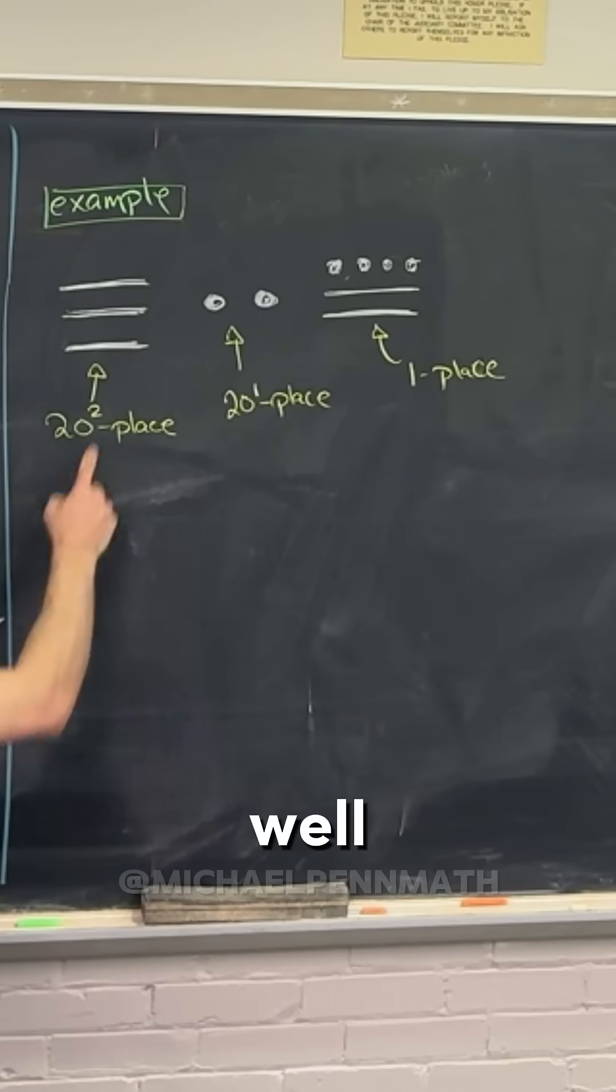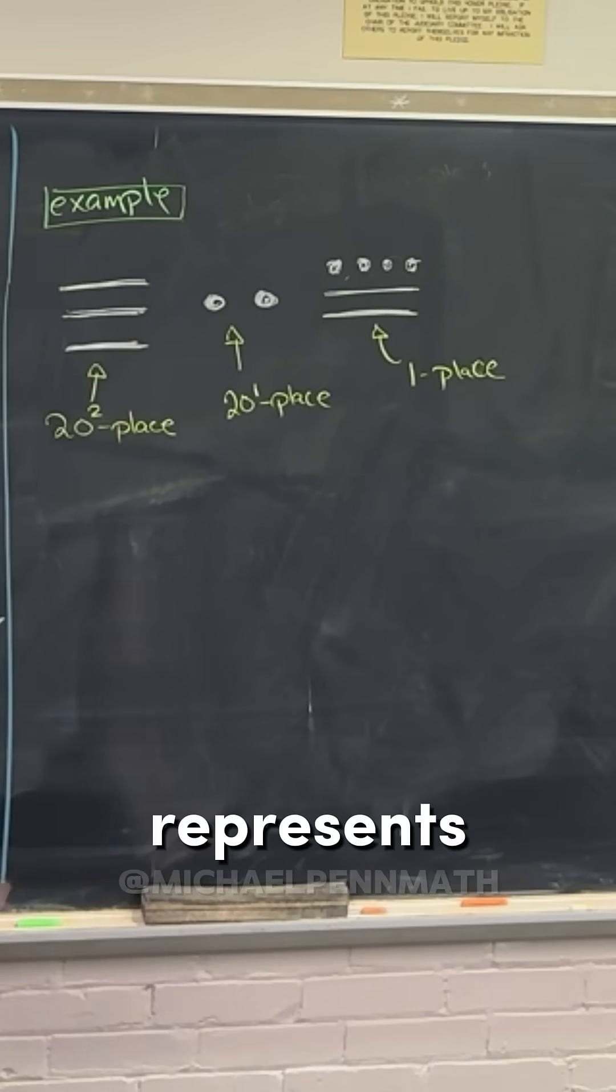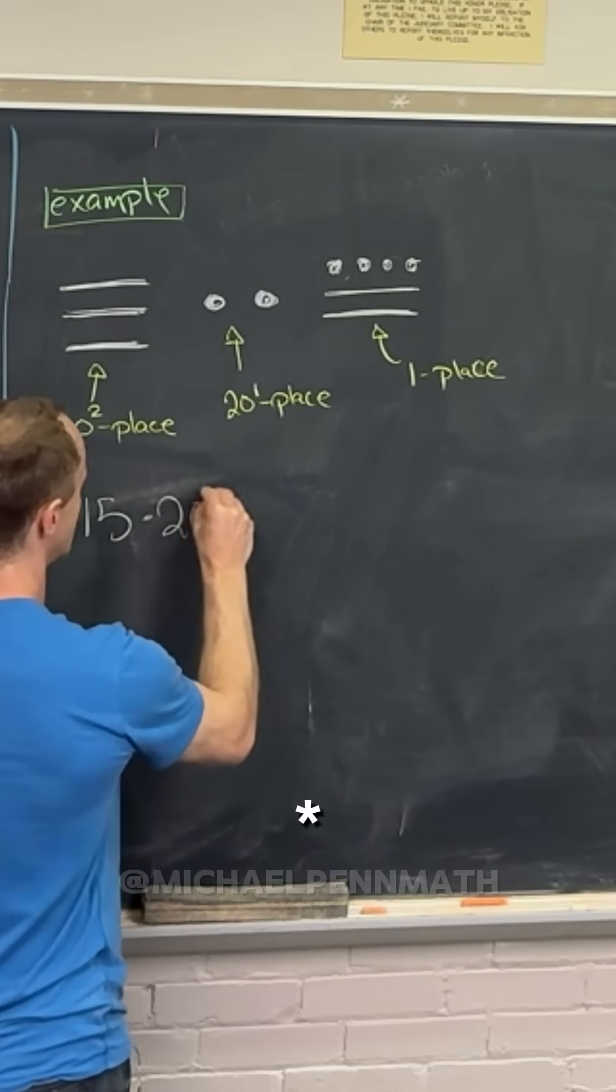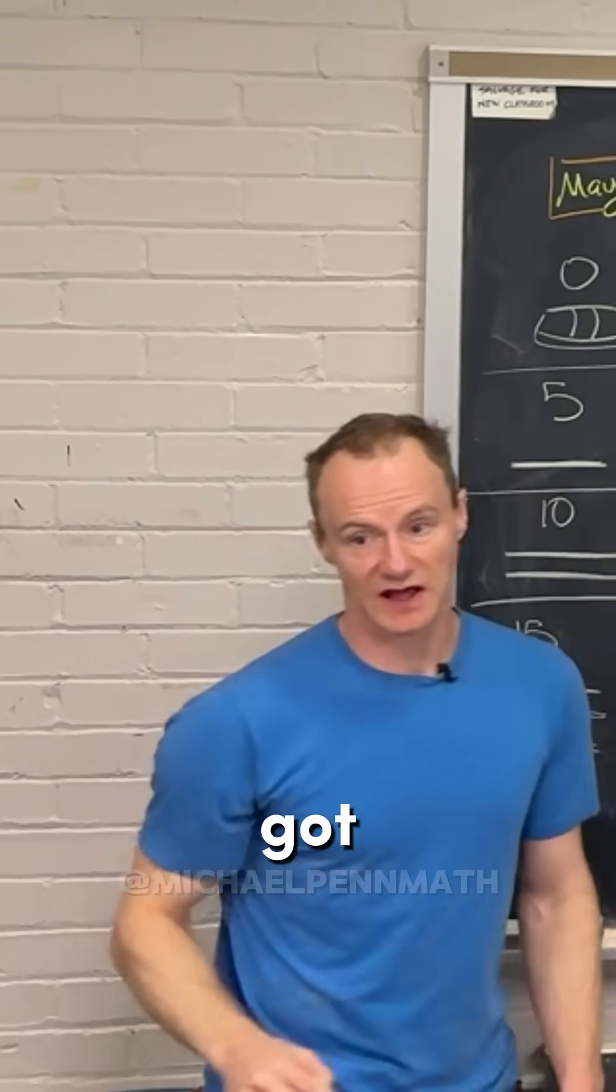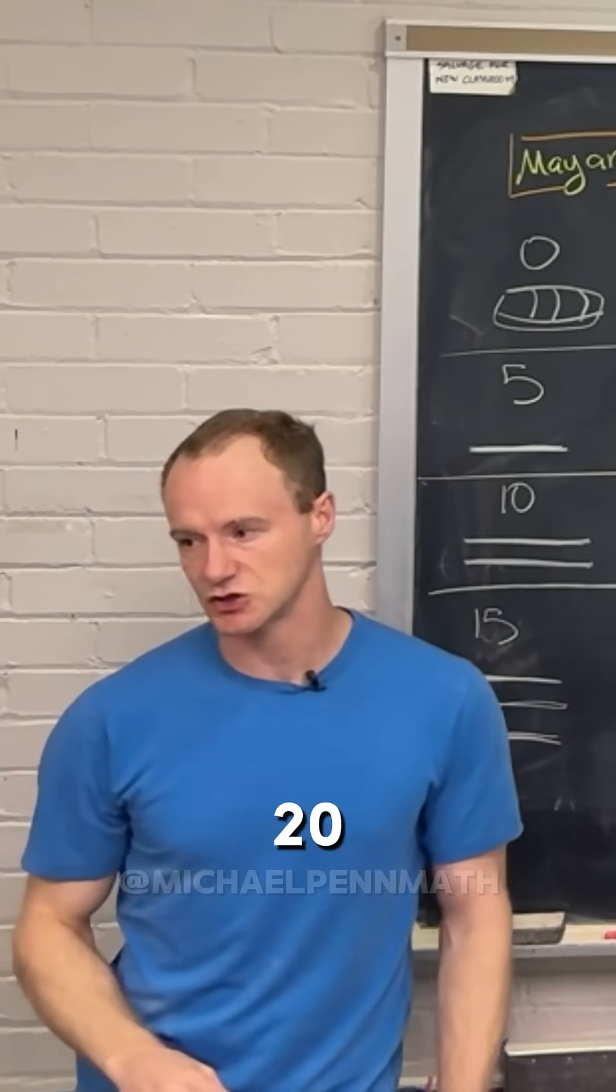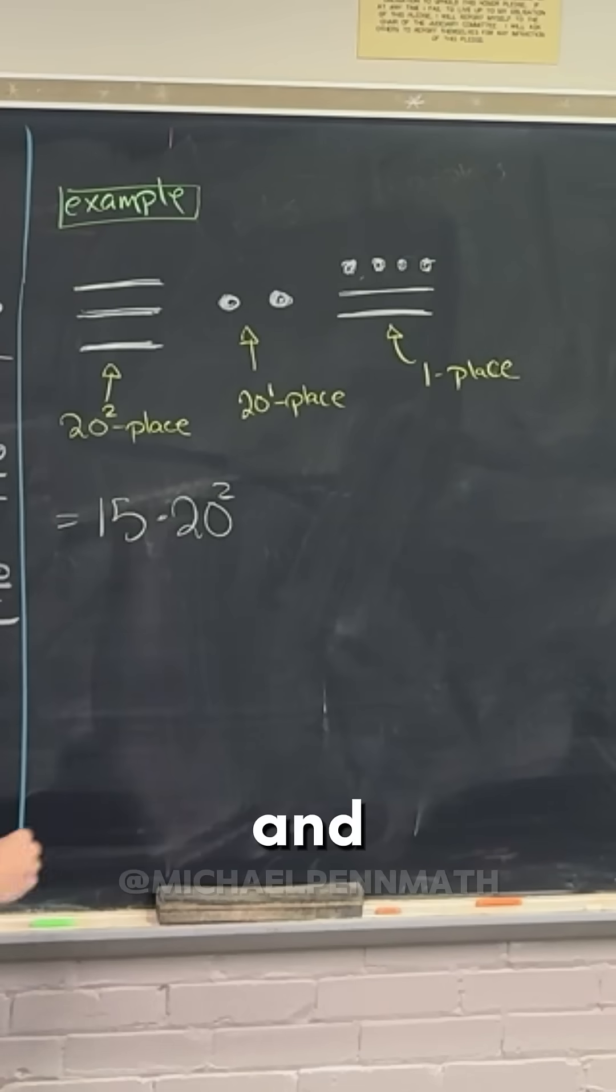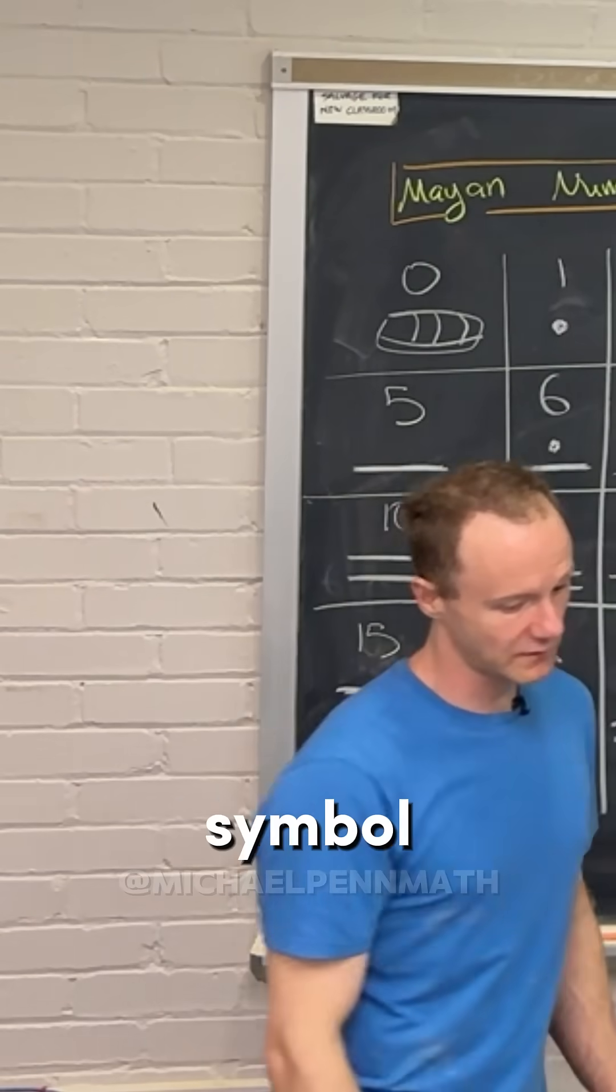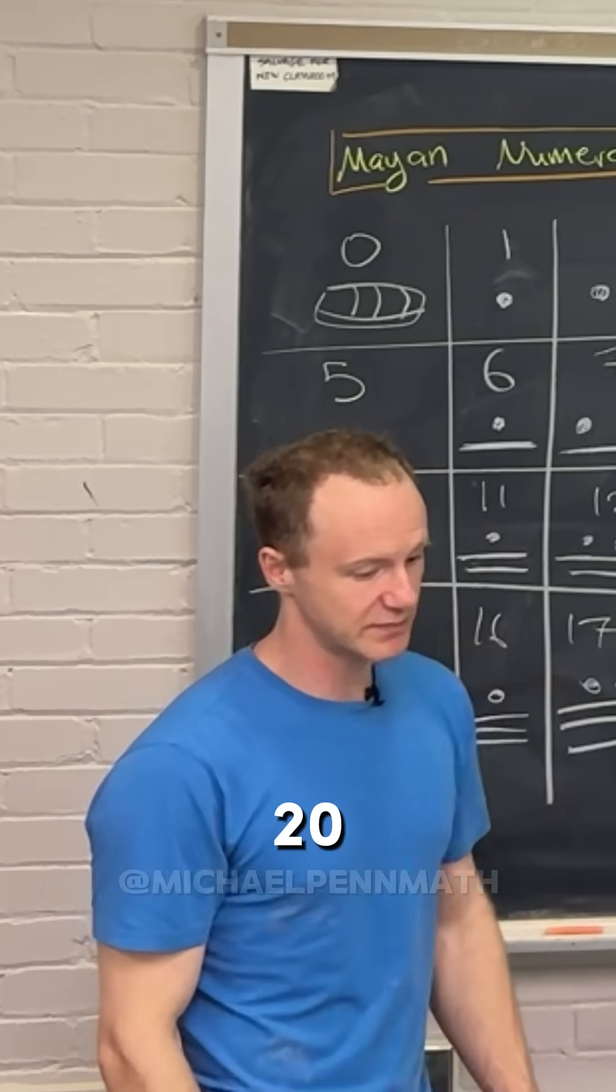So let's see - the three lines represents 15, right? So this number is equal to 15 times 20 squared, because it's got the symbol for 15 and it's in the 20 squared position. And then next we'll have plus 2 times 20, because it's got the symbol for 2 but it's in the 20 position.